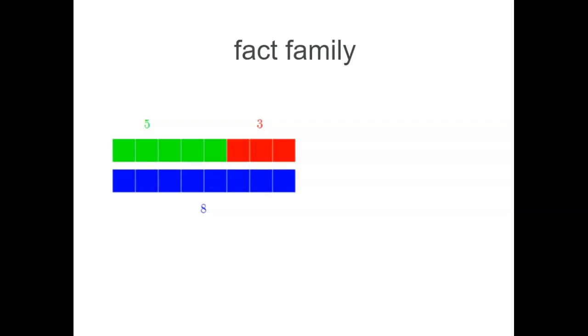This fact family is for 5, 3 and 8. We can connect it using an addition like this. We have 5 green squares, 3 red ones and altogether that makes 8 squares.